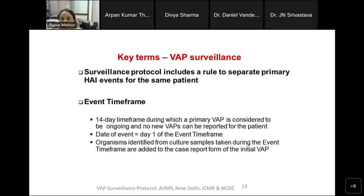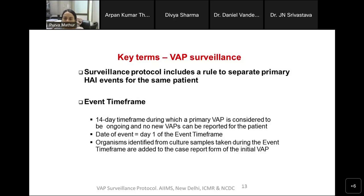The next term is the event time frame. The surveillance protocol includes a rule to separate primary HAI events for the same patient, since a patient may have multiple VAPs during their stay. We need to know when one event is ending to finish the case report form and document outcomes. The event time frame is a 14-day period during which a primary VAP is considered ongoing and no new VAPs can be reported. If organisms are identified from respiratory samples during this event time frame, they are added to the case report form for the initial VAP.